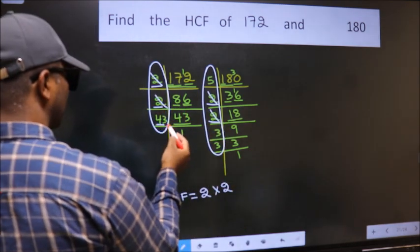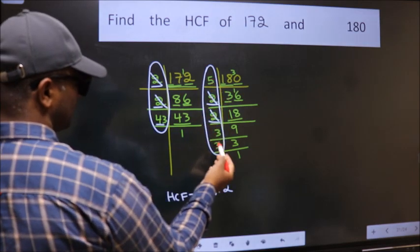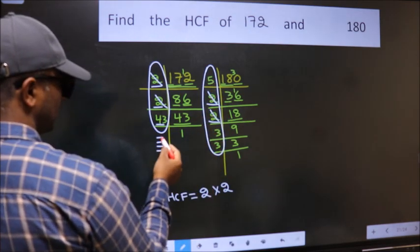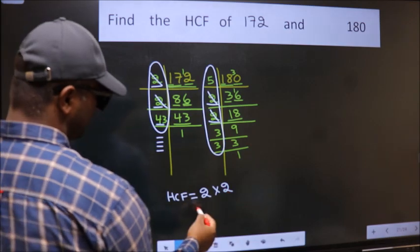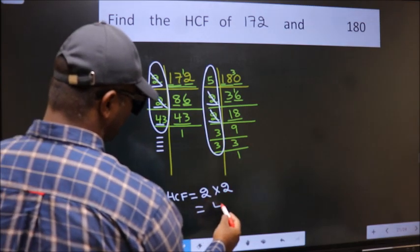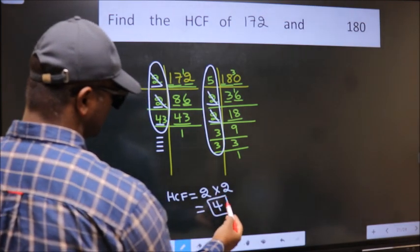Next number 43. Do we have 43 here? No. No more numbers have been left out. So our HCF is 2×2=4, which is our HCF.